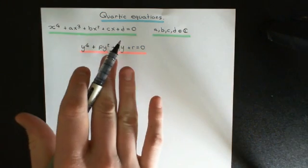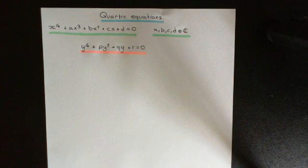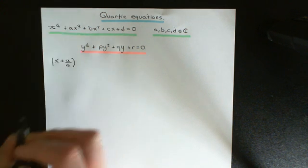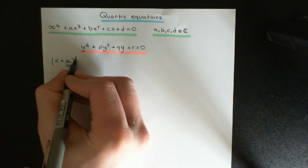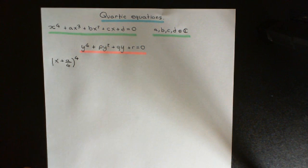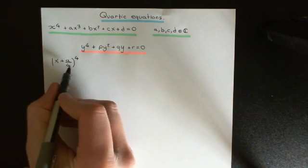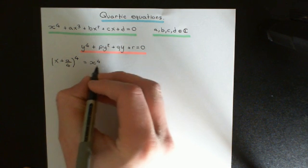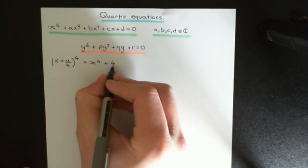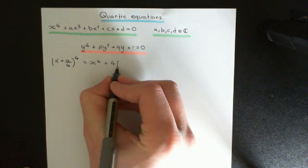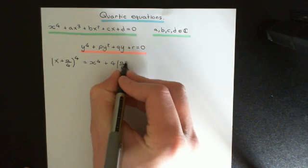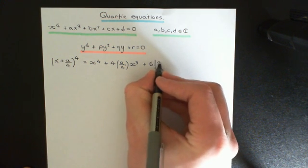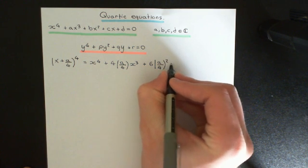The way to turn the quartic into one with no degree three term is to rewrite it in terms of powers of x plus a over four. Starting with x plus a over four to the power of four expanded via binomial expansion, we get: x to the power of four, plus 4·(a/4)·x cubed, plus 6·(a/4)²·x squared, plus 4·(a/4)³·x, plus (a/4)⁴.